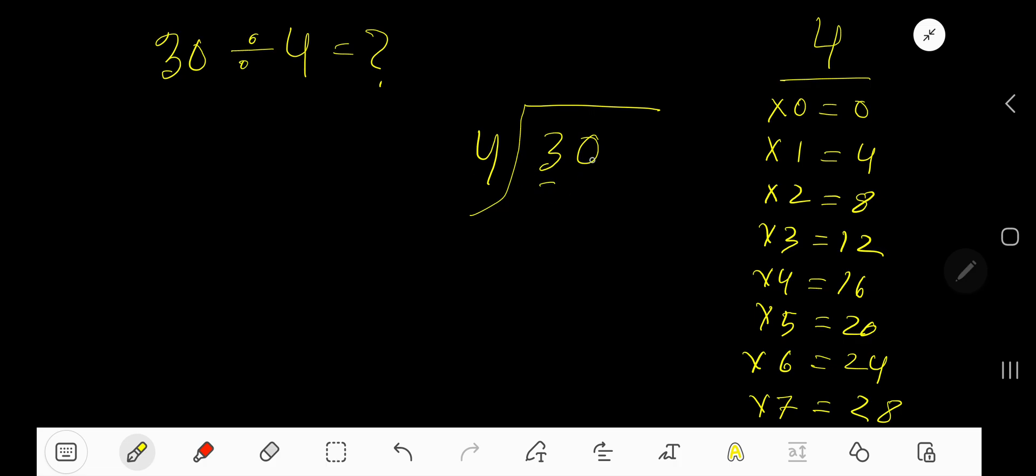4 goes into 3 how many times? 0 times, as 3 is less than 4. So 0 times 4 gives you 0. Subtract, bring down the 0. 30. 4 goes into 30 how many times?